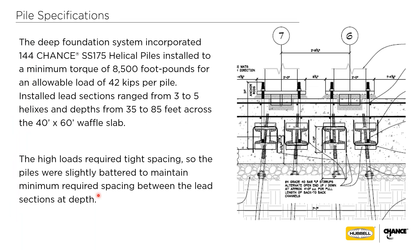The mat slab solution was rejected due to excessive settlement. Driven piles were rejected due to noise and vibration in the surrounding residential neighborhood. Drilled cast-in-place shafts were rejected due to high water table, potential for caving, and the need for casing. Helical piles were selected to handle the variable conditions and eliminate off-haul of spoils. The design incorporated 144 CHANCE SS-175 solid bar square shaft piles — one-and-three-quarter-inch square shaft — installed to a minimum torque of 8,500 foot-pounds, giving an allowable ASD capacity of 42 kips per pile.